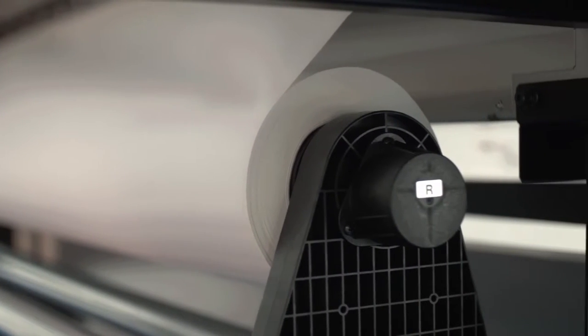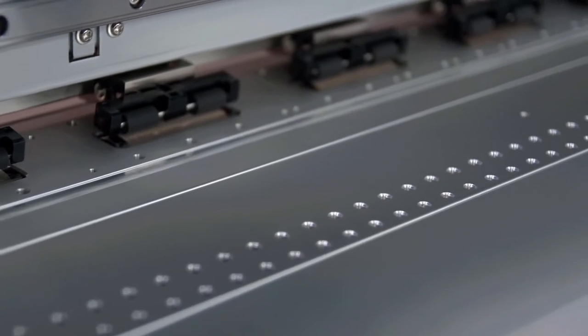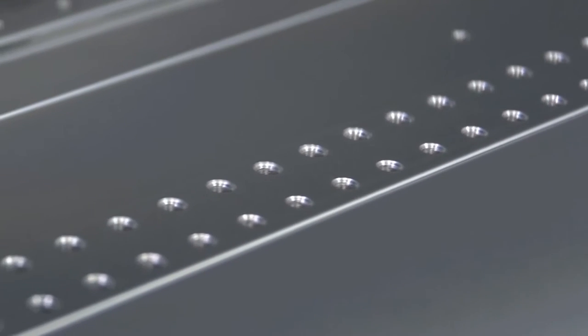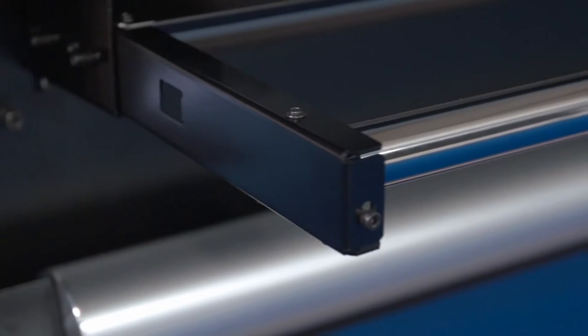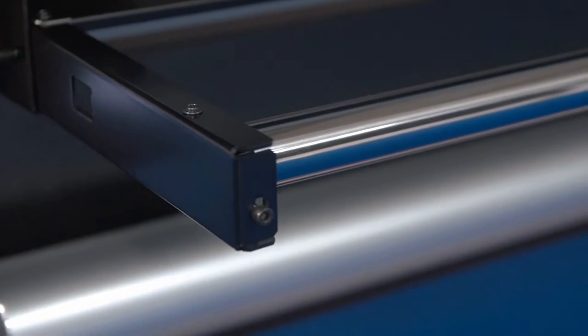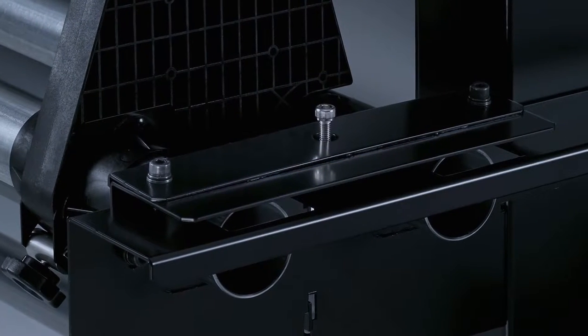The media roll holder ensures the precise feed of heavy transfer paper rolls up to 40kg in weight. An advanced vacuum system keeps the thinnest of papers flat for printing while an integrated heater helps dry the ink. And the new convenient feed adjuster at the front and rear provides even tensioning and prevents media skewing.